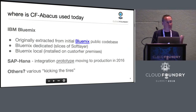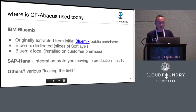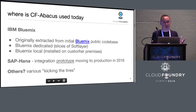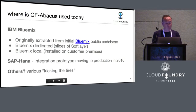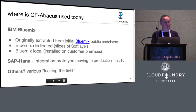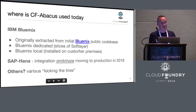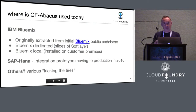SAP has been very active and contributed a lot — from the beginning they implemented all the app usage and runtime metering, and recently contributed a whole Concourse pipeline for Abacus. SAP HANA is also using Abacus. On GitHub you can see a number of people have starred the project, opened issues, and submitted pull requests — other companies are kicking the tires or using it almost in production.